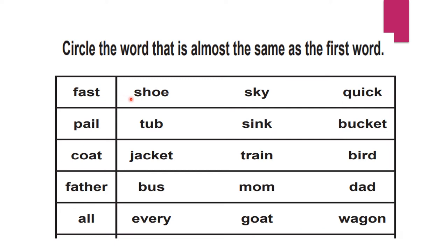So if the first word is 'fast,' what is similar to 'fast'? If it's 'pale,' what is similar to 'pale'? Then 'father,' 'all' — all these are the first words, and from each row you need to find which one is similar to that first word. Let's start.